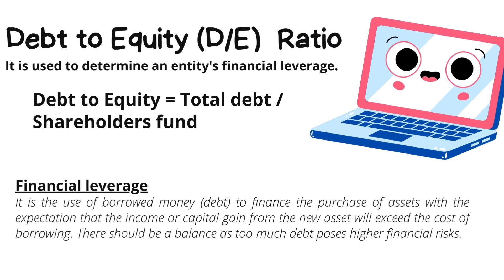For example, the debt-to-equity ratio. This ratio basically compares the company's total liabilities with the shareholder equity. It is calculated by dividing the company's total liabilities by its shareholder equity. It gives information about the degree to which the company is financing its operations based on debt instead of using its own resources.